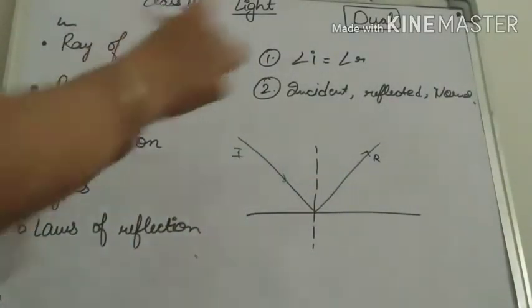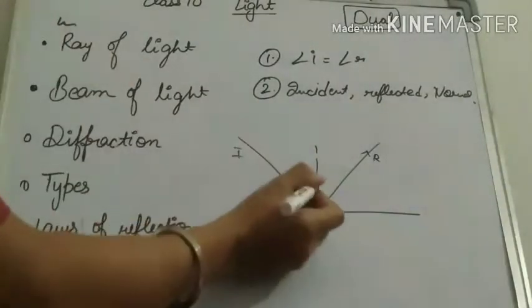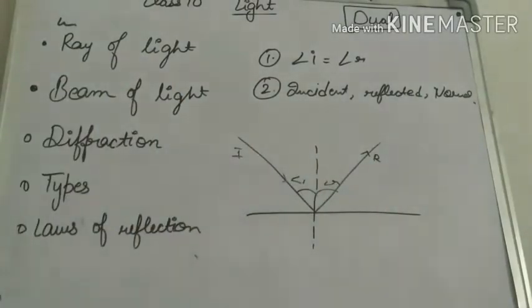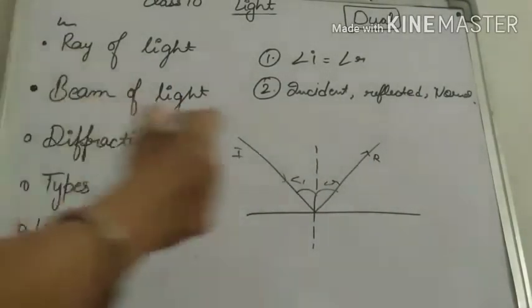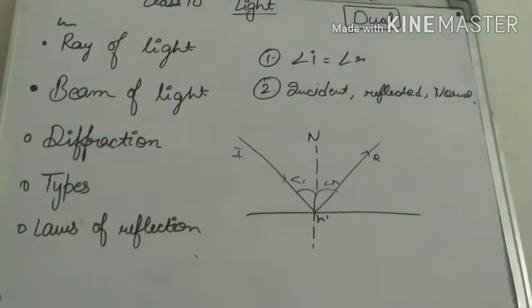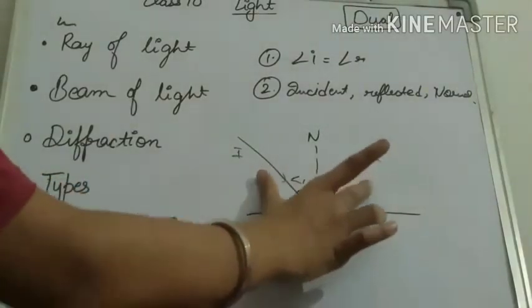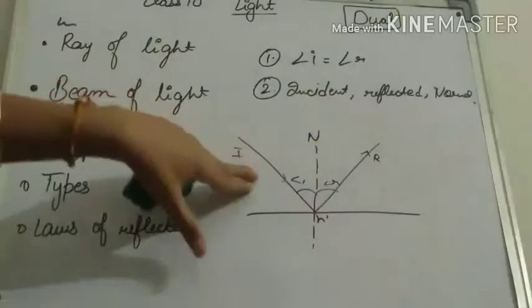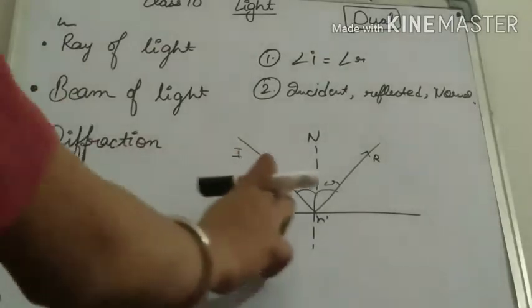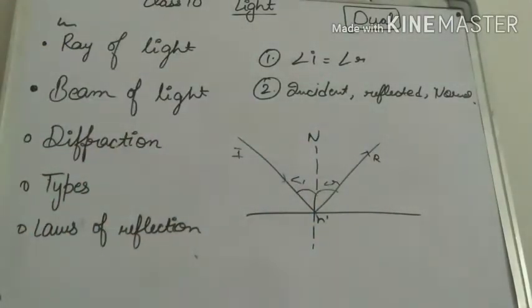Now let's see that angle i is equal to angle r. Angle of incidence equals angle of reflection. What is the normal? The normal is perpendicular between incident ray and reflected ray. Angle i is equal to angle r. This is your explanation in detail.